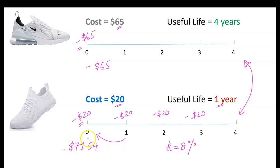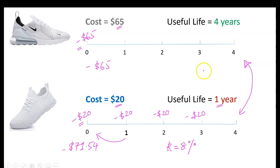So now, which is the more expensive shoe? It turns out the generic brand is more expensive. Would you rather spend $65 today, or $71.54 today for a shoe that lasts you four years? Spending $65 on the Nike shoe is clearly the better option. That is the intuition behind the equivalent annual cost method.